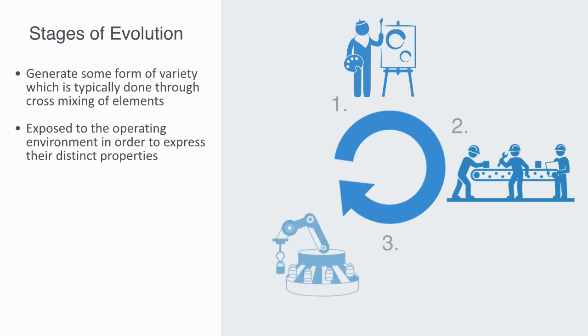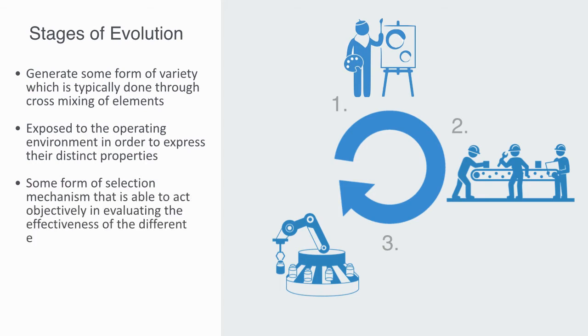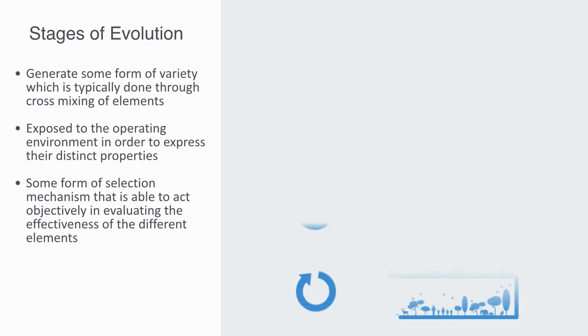Lastly, there must be some form of a selection mechanism that is able to act objectively in evaluating the effectiveness of the different elements within that particular context, retaining those that have been effective whilst disposing of those that have not. This process has to be iterated upon over the course of a number of life cycles before change will appear.